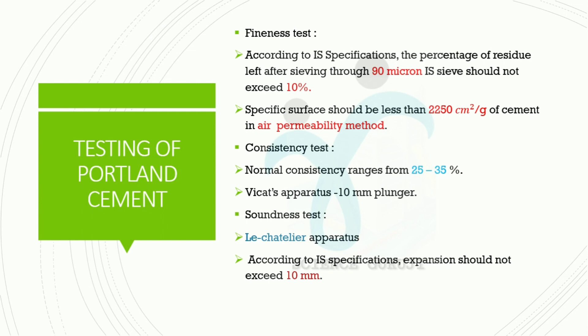The consistency test: normal consistency ranges from 25 to 35 percent. The consistency test uses the apparatus known as Vicat's Apparatus, which is a 10-minute plan. Next, the soundness test uses the apparatus known as Le Chatelier Apparatus. According to IS specifications, expansion should not exceed 10 mm.